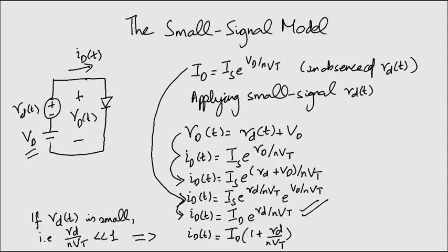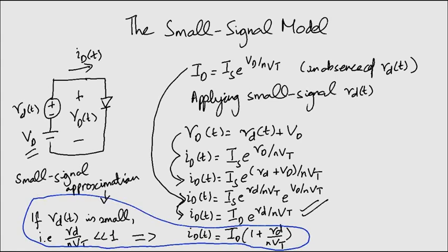This is the small signal approximation. It is valid for signals smaller than about 10 mV for n equals 2 and 5 mV for n equals 1.